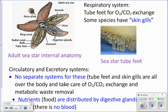Respiratory system: these animals use their tube feet for carbon dioxide and oxygen exchange. They have tube feet on the underside of their five arms, or multiples of five arms. Those tube feet are very thin, so they can exchange carbon dioxide and oxygen across the surface of the tube feet. That essentially serves as their respiratory system.